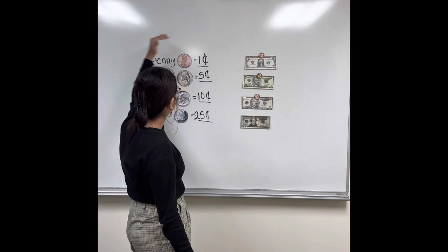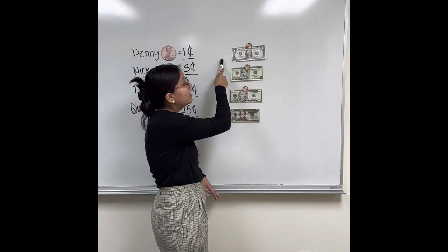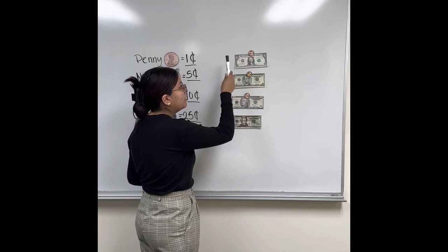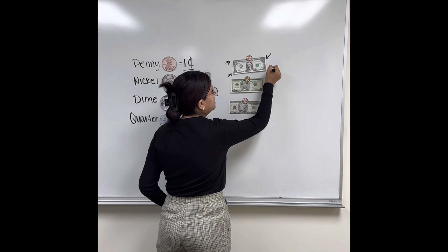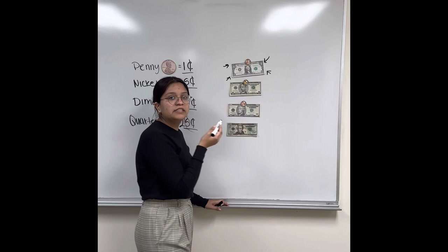So first we're going to start off with this bill right on top. Can anyone tell me what they think the value is? The first indicator that tells us the value is very simple — you just look right there in the corner. What number do we see here? One. Good job. So what do you think the value of this dollar is? One dollar. Good job.